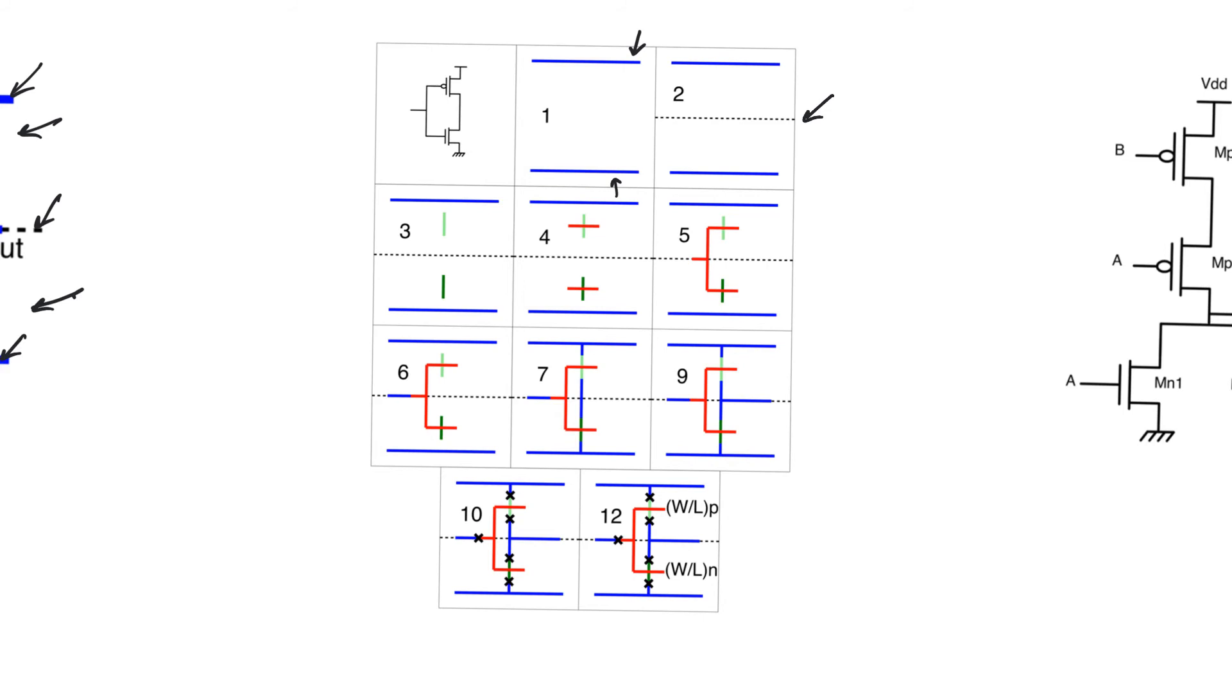In step number five, we will extend the polysilicon so that it makes a contact between the gates of the NMOS and the PMOS transistor according to the circuit. According to which specific CMOS circuit we are looking at, there's always an NMOS and a PMOS which share an input. We will extend the polysilicon line a little bit towards the left for a reason that will become clear shortly.